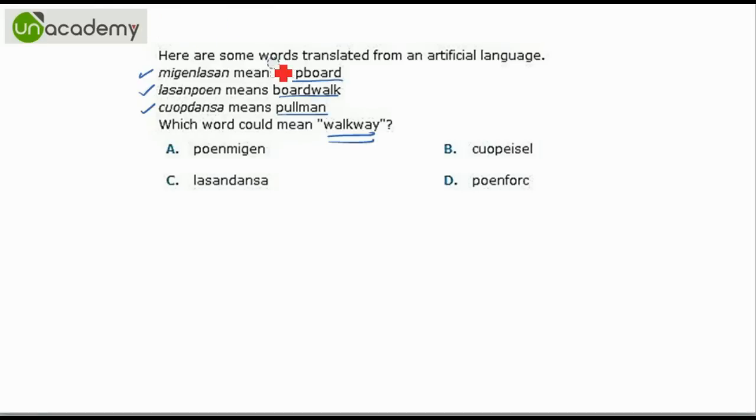We have the word cupboard and in artificial language it is written as this. Broadwalk is written as this. So from these two words we can tell that board is this portion L-A-S-A-N. So walk is P-O-E-N and cup is M-I-G-E-N.